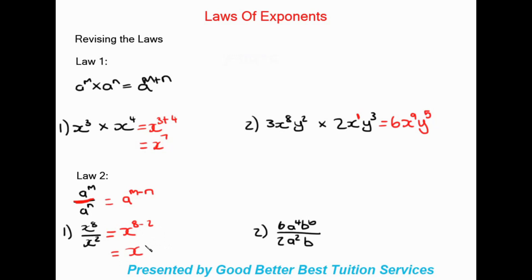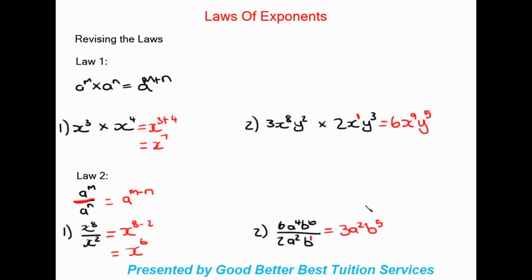That gives us x to the power of six. Now with coefficients included: six divided by two gives three, then a to the power of four minus two, which is two, and b to the power of six minus one (the invisible one) which gives five. So the answer is three a squared b to the power of five.